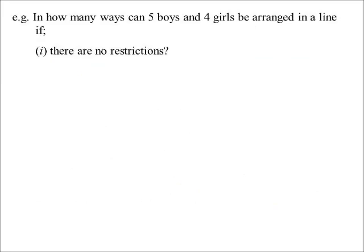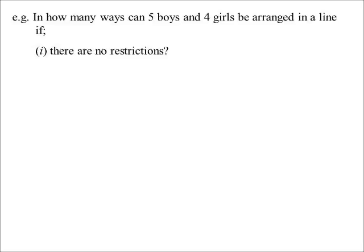Example: arrange five boys and four girls in a line. The first part often has no restrictions — this would be the denominator if we were doing probability. There's no restriction, so it doesn't matter that I've got five boys and four girls — I've just got nine people. So it will be 9 factorial, which is 362,880 different ways.